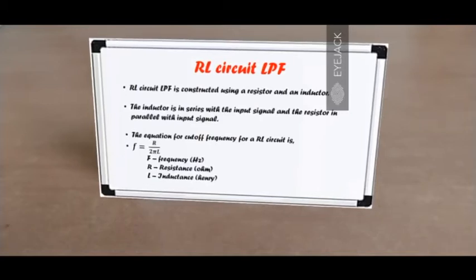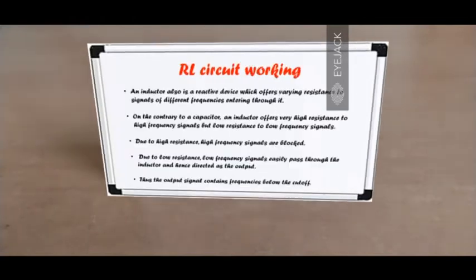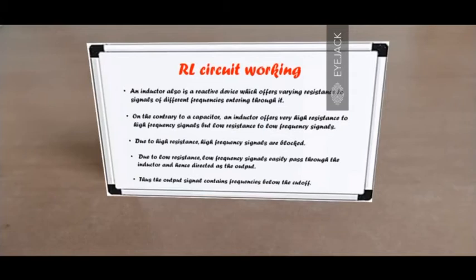Let's look at the circuit diagram for an inductive low-pass filter. On the left we have an input signal passing through the inductor, and then there is an output which has only low frequency — the high frequency has been blocked. An inductor is also a reactive device, just like a capacitor, which offers varying resistance to signals of different frequencies. The key difference is that the inductor offers very high resistance to high frequencies and very low resistance to low frequencies.